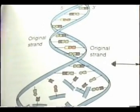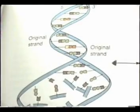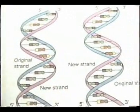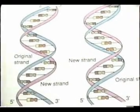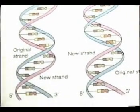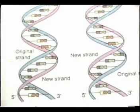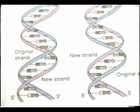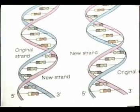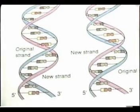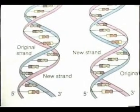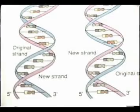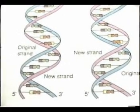The double helix is made up of paired nitrogen bases held together by hydrogen bonds: guanine, cytosine, adenine, and thymine. The sequence of nitrogenous bases dictates what specific genetic information that molecule encodes. A segment of DNA that codes for the cell's synthesis of a specific protein is called a gene. Watson and Crick also noted that adenine always pairs with thymine, and cytosine always pairs with guanine.